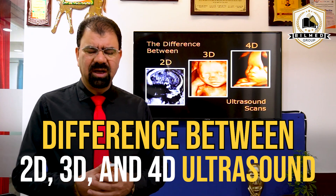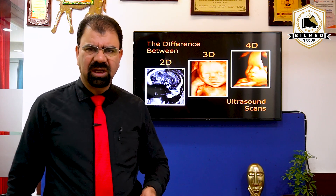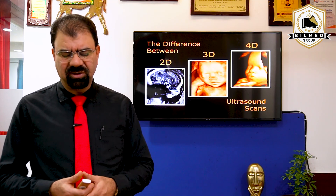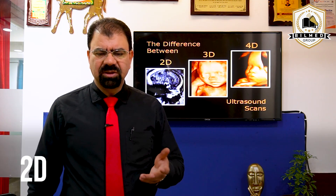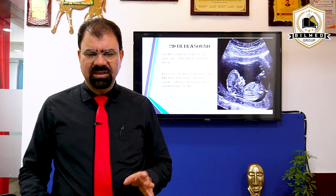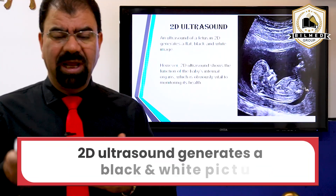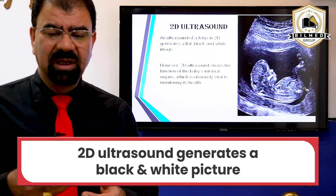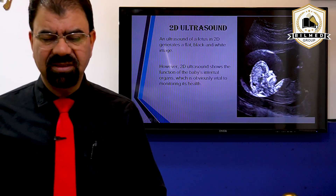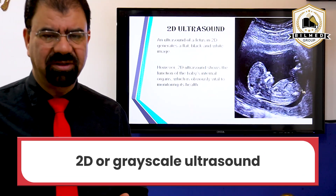We use these terms for ultrasound — sometimes we say I have got a 4D done, a 3D done, or a grayscale ultrasound done. When we say a 2D ultrasound, an ultrasound of a fetus in two dimensions will generate a black and white picture. When the image is black and white like this, we say that it is a 2D ultrasound or a grayscale ultrasound.